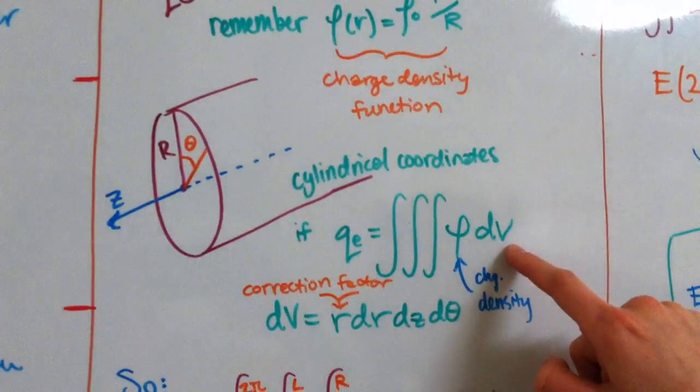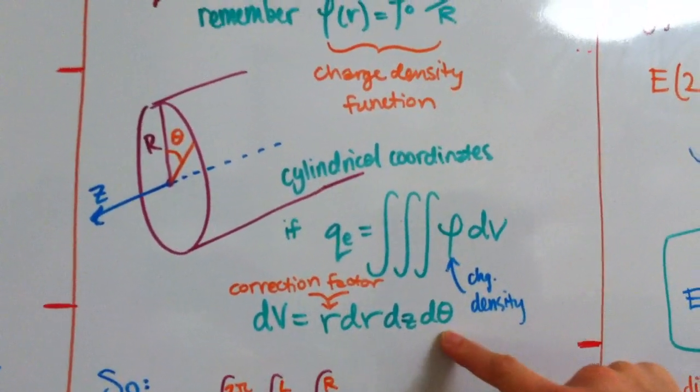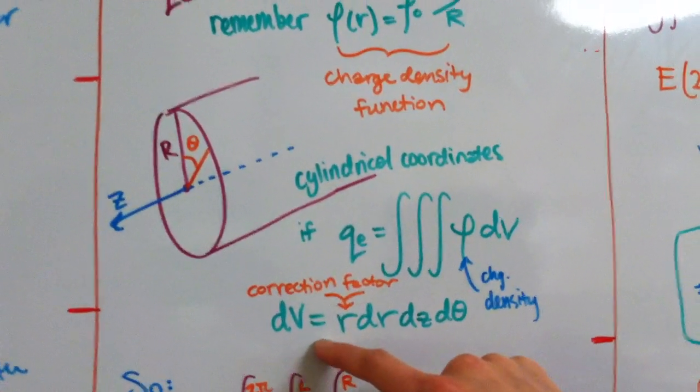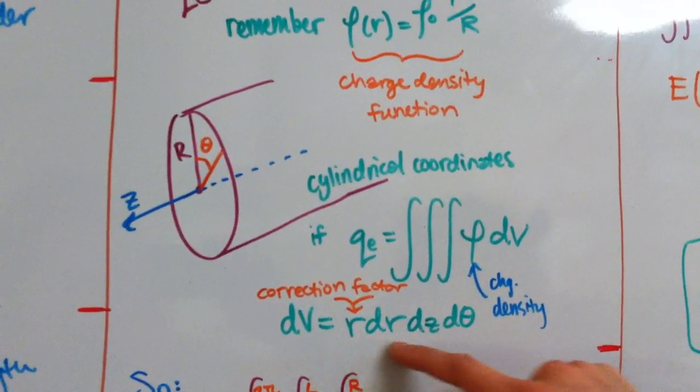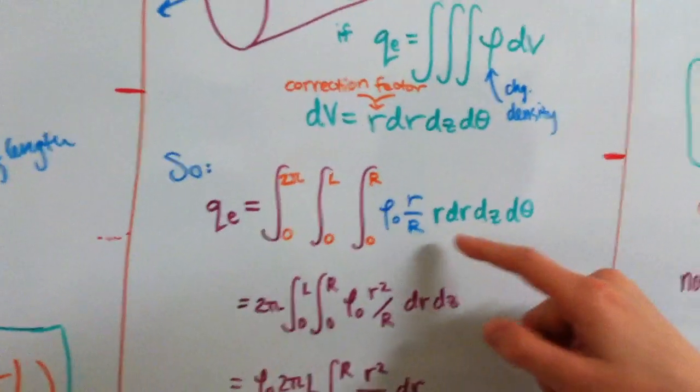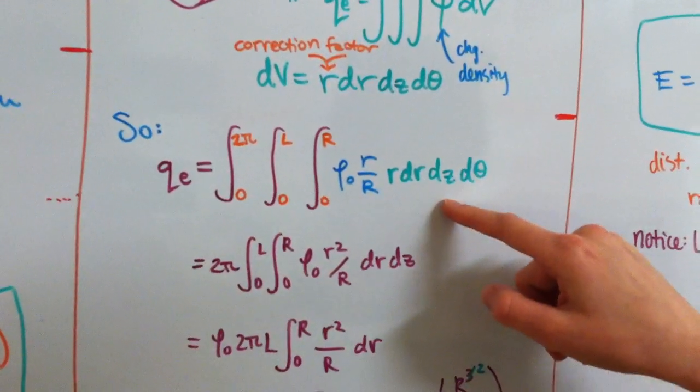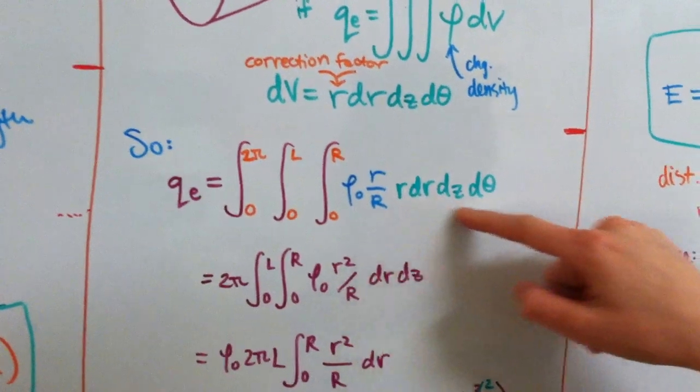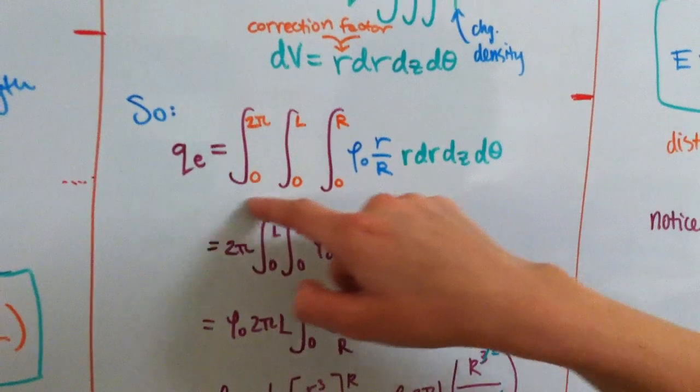And we have dV here, which has a correction factor for cylindrical coordinates, which is the r here, we just add an extra r. So, dV is equal to r dr dz d theta. And we're going to plug in dV and our charge density function, and we're going to get this equation here, where we have QE is equal to this integral, where we have the charge density function here in blue, and then our dV in green, and the limits in orange.